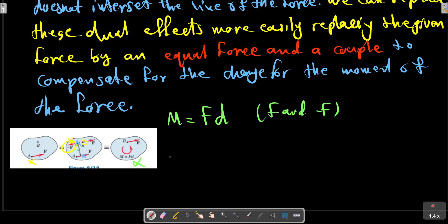We have replaced the original force at A by the same force acting at a different point B and a couple, without altering the external effects of the original force on the body. The combination of the force and the couple in the right-hand part of the figure is referred to as a force-couple system.